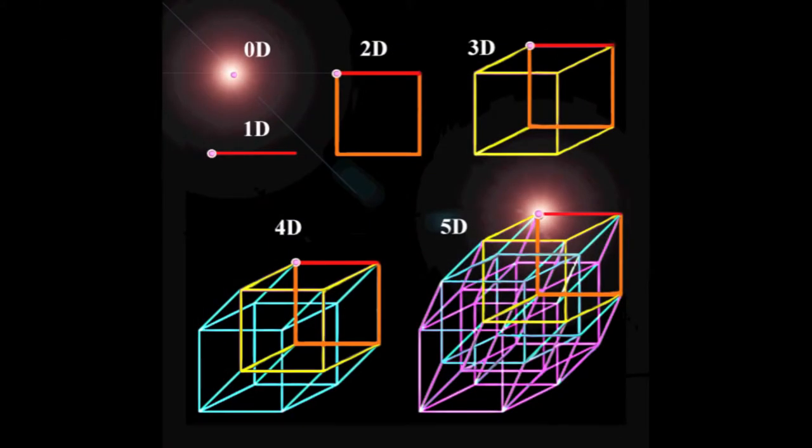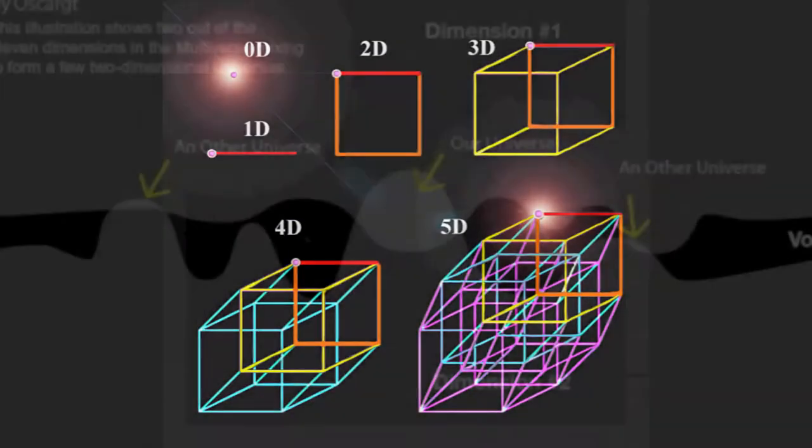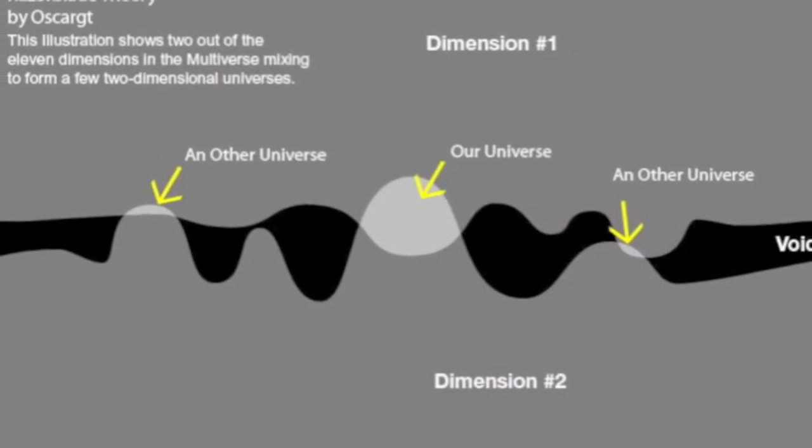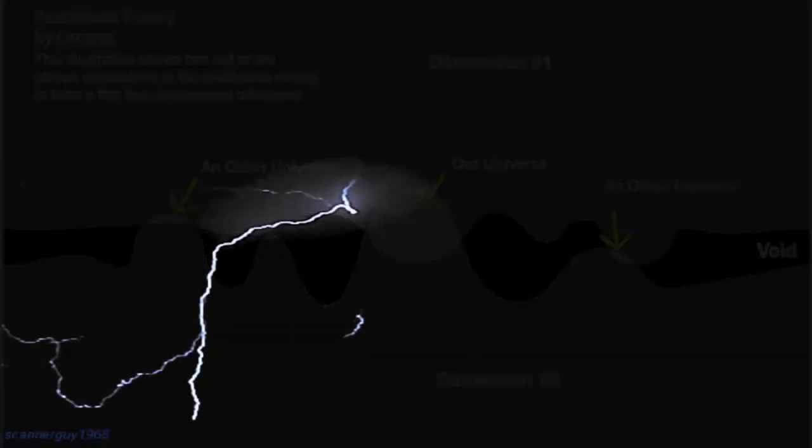As of today, there are as many as eleven dimensions being explored by theoretical physicists across the globe. The problem is, most of these descriptions are actually unprovable.